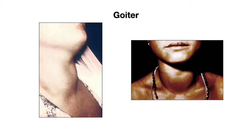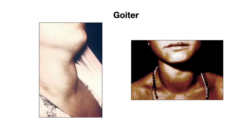In these images here you can see what goiter looks like. Interestingly, goiter as well as Graves' ophthalmopathy, which we'll discuss later, are pretty characteristic findings of Graves' disease and so can help distinguish Graves' disease from other forms of hyperthyroidism.